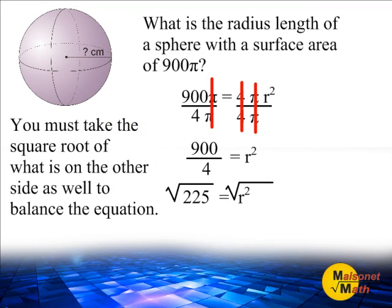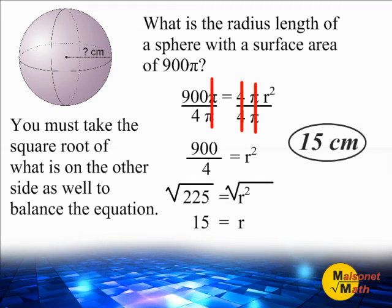To balance our equation, we must also do the square root of whatever is on the other side of our equal sign as well. The square root of 225 is 15. And the exponent and the radical sign on the right hand side cancelled each other out. So now we have successfully isolated the variable r. So we now know that the radius of this sphere is equal to 15 centimeters.